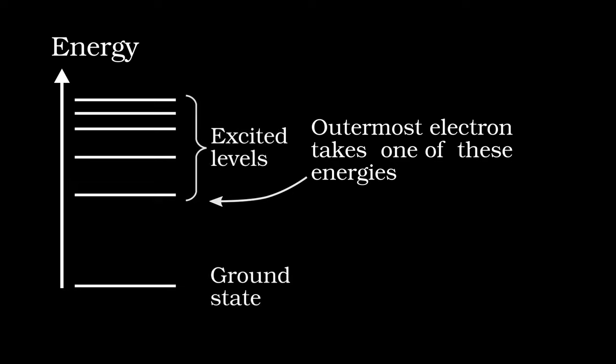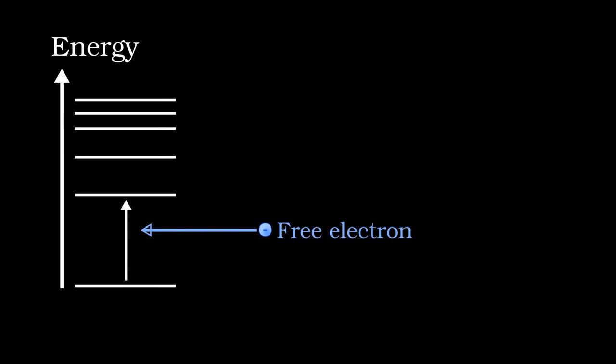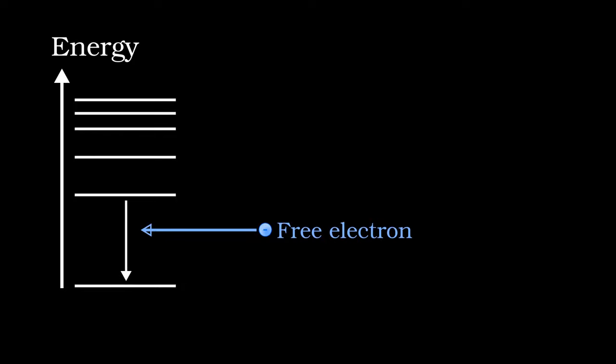The lowest possible energy is called the ground state, and above that are excited states. An electron can be excited up in energy if another atom or free electron collides with it. The colliding particle loses energy, which the electron gains. The electron can also be excited by absorbing a photon, but this photon must be carrying almost exactly the same energy as the gap between the levels in question. All of these processes are reversible, so a free electron may come in, de-excite a bound electron and carry off the excess energy. If an excited bound electron is left alone for long enough, it will decay after a certain time, which is random.